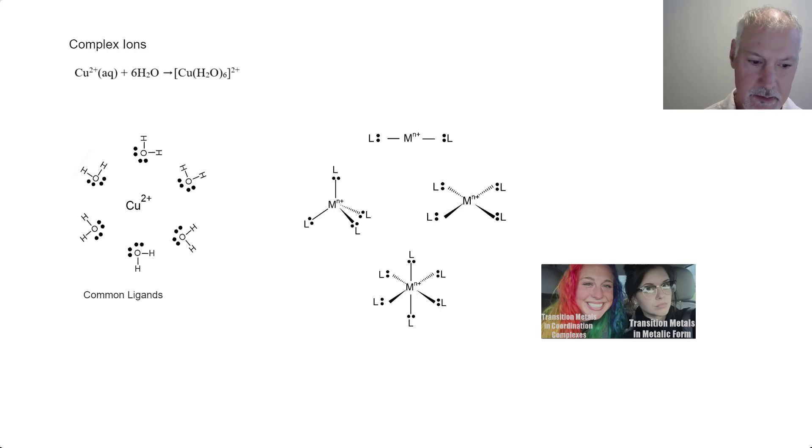Complex ions demonstrate a unique union between transition metals and a class of chemicals called ligands. Let's take a look at an example. So here I've got the transition metal copper and water is my ligand.